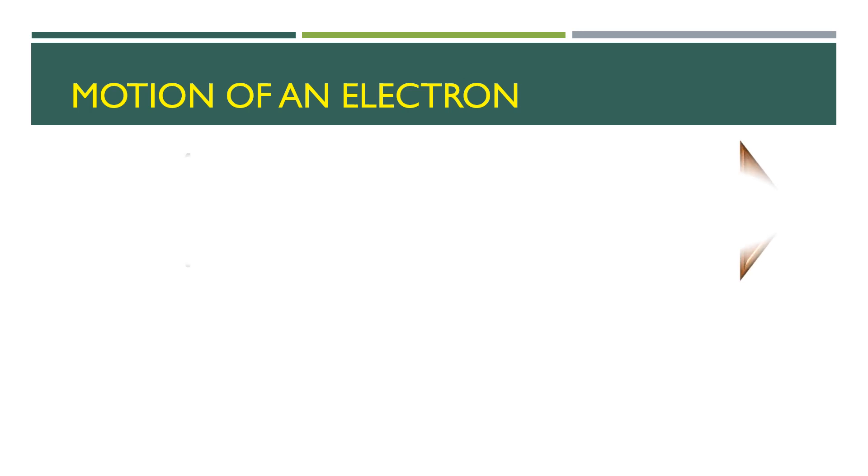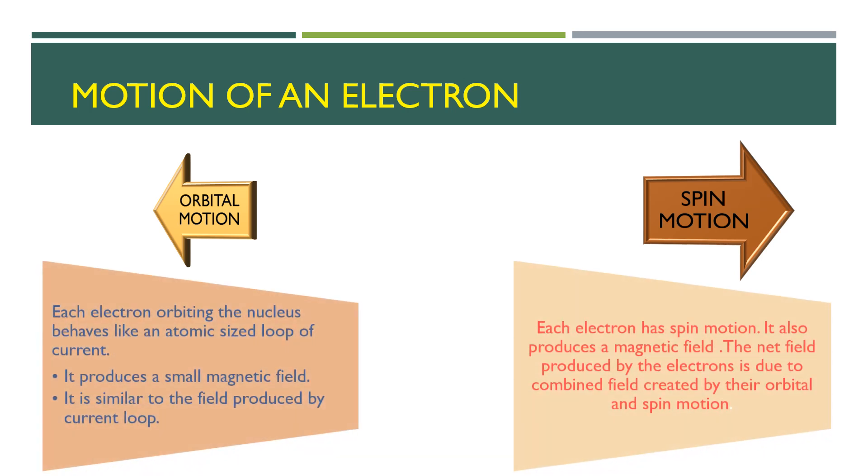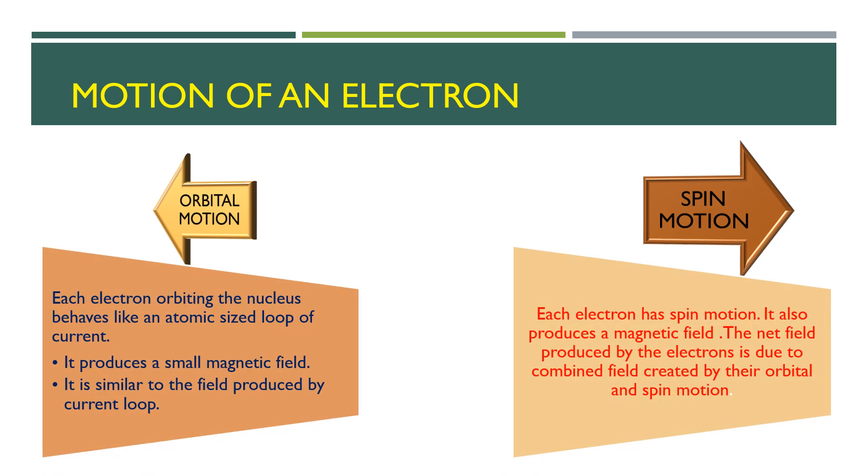Magnetism which is produced by electrons within an atom can be because of two types of motions. First, each electron is orbiting its nucleus; it behaves like an atomic size loop of current that generates a small magnetic field.